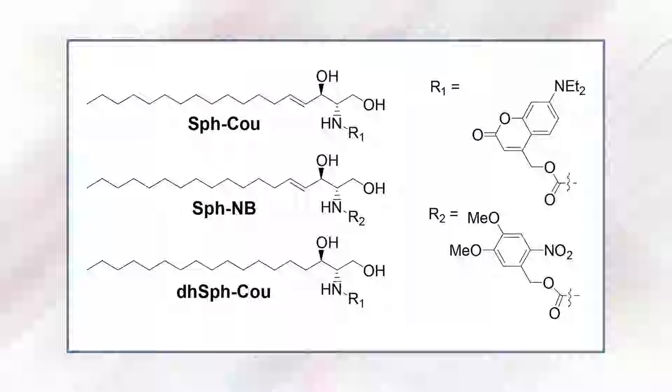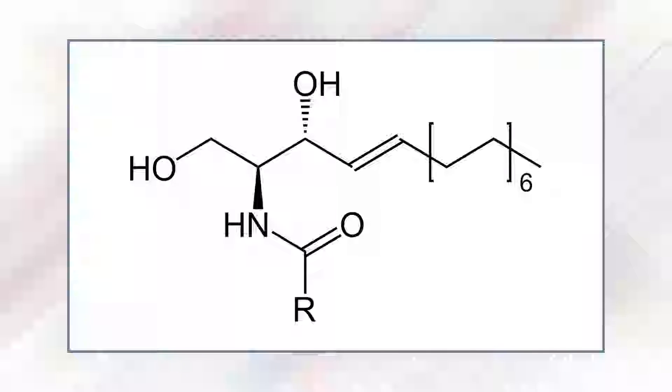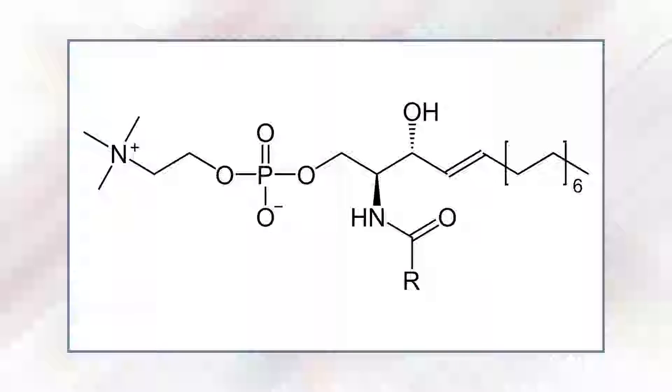Sphingolipids are a less abundant class of membrane lipids, derivatives of sphingosine — an amino alcohol containing a long hydrocarbon chain. Sphingolipids consist of sphingosine linked to a fatty acid by its amino group, forming a ceramide. If the substitution at the terminal alcohol is phosphorylcholine, the molecule is sphingomyelin, the only phospholipid of the membrane not built on a glycerol backbone.